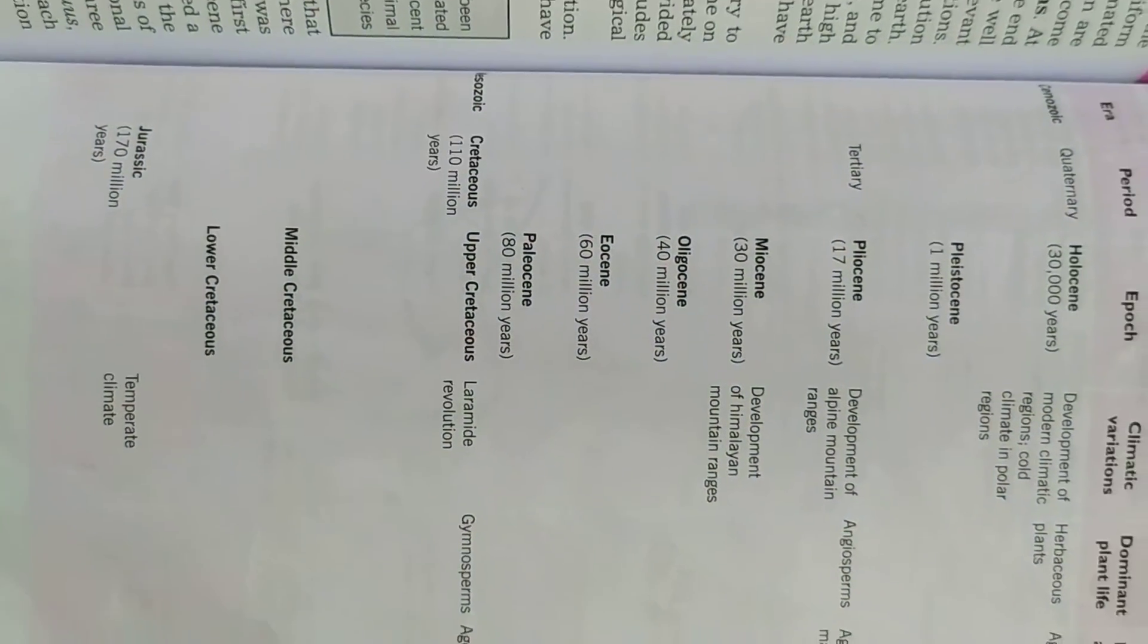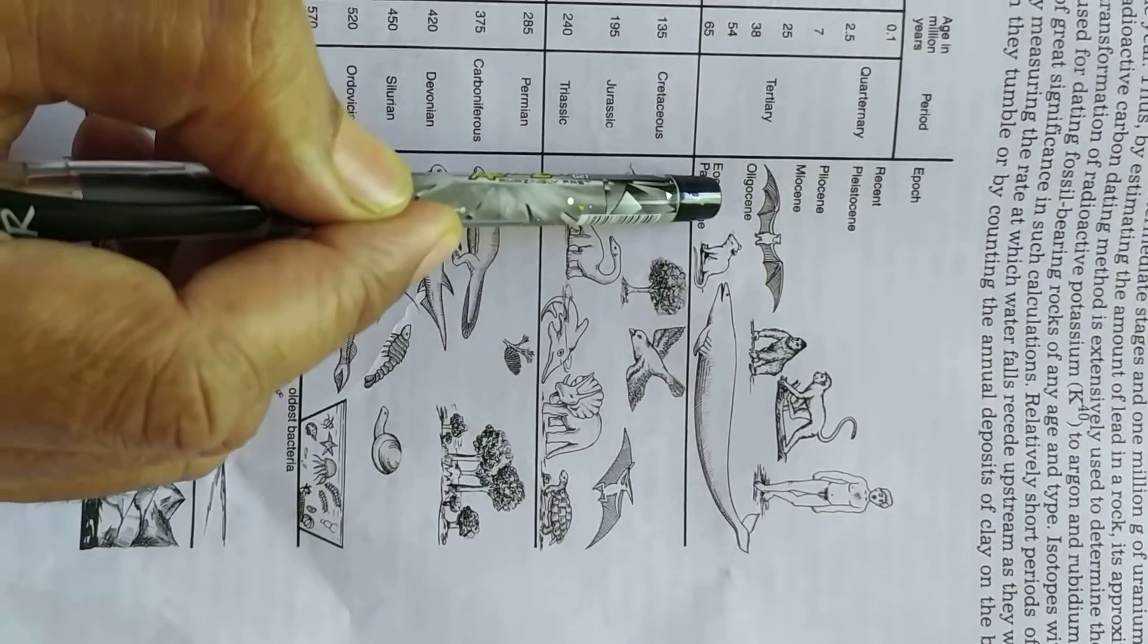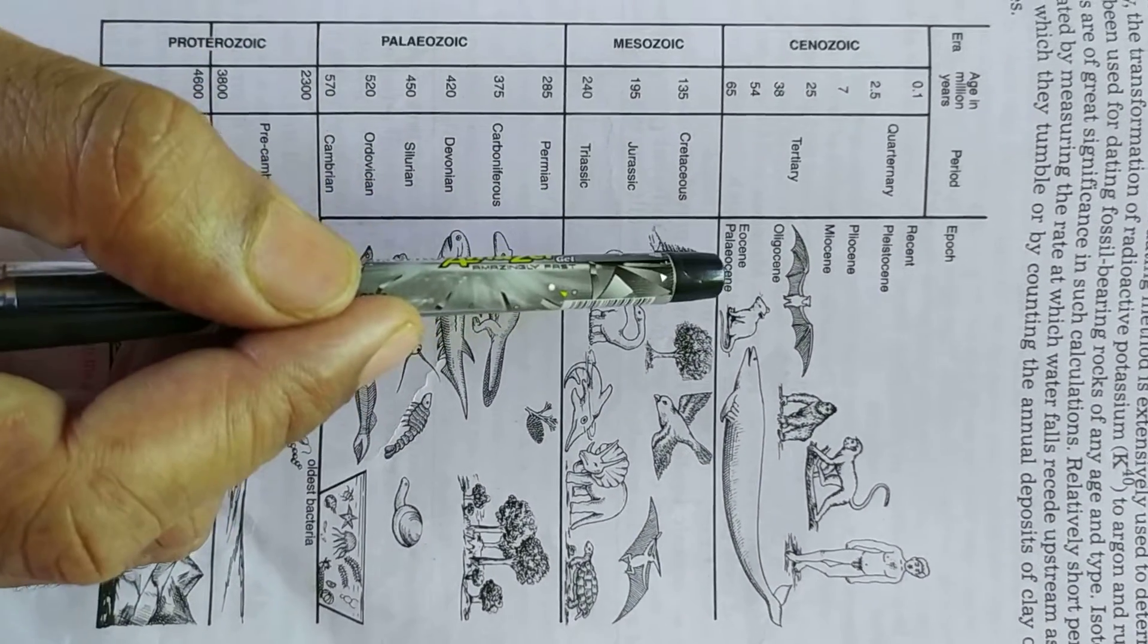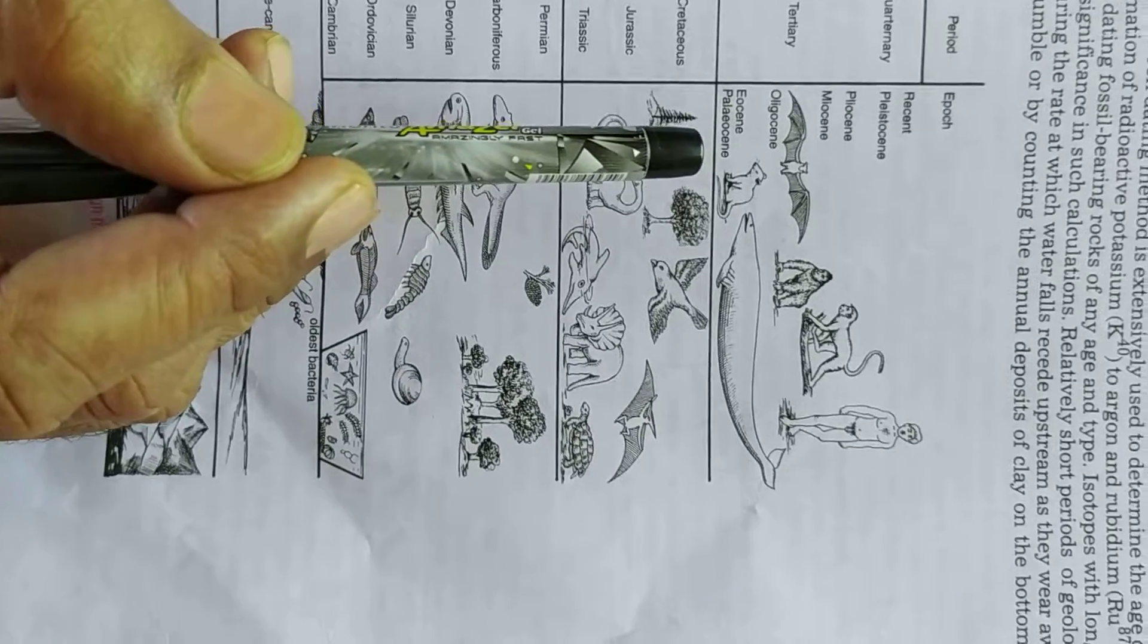Each epoch shown in the diagram on page 295 and page 297 also shows the kind of animals